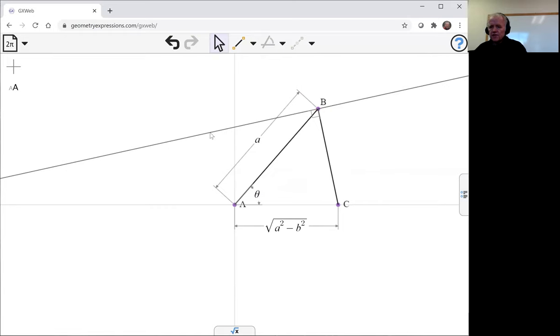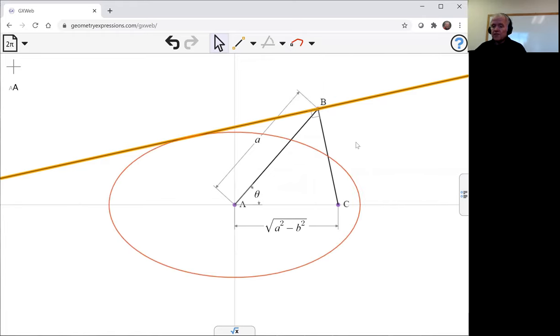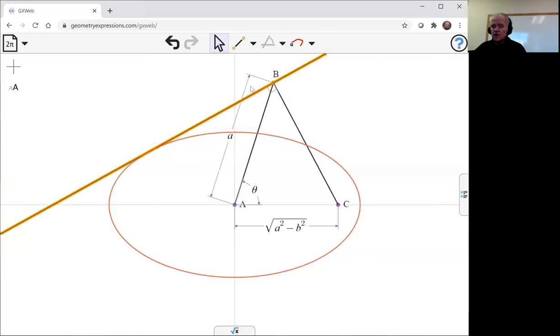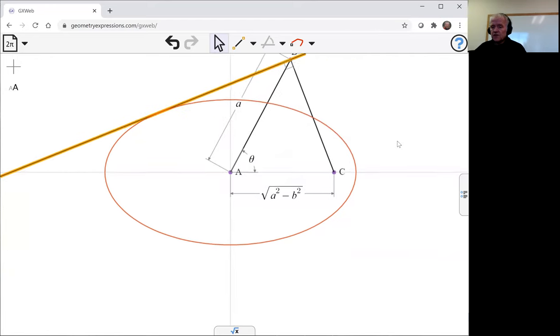That means it's tangential to the ellipse. We can show that by creating the envelope that we use, the same tool as for locus, but with a line selected that gives us the curve which that family of lines is tangential to. And in this case it looks very much like an ellipse.